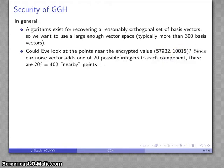Well, this isn't actually very feasible since our noise vector, even in this R2 case, adds one of 20 possible integers to each component. And so that says that there's 20 squared, there's 400 points that are close to the encrypted value.